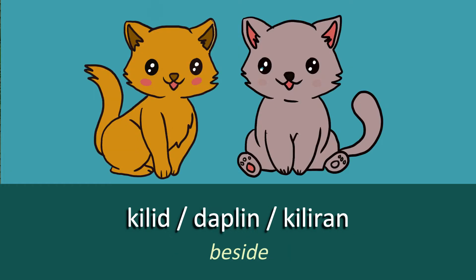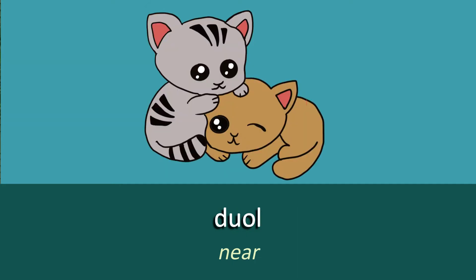Moving on, we have the word for 'Beside'. In Besaya, Beside is 'Kilid'. You can also use 'Daplin' or 'Kiliran'. Our next word for you is 'Near'. You can just say 'Duol'. Nice and simple — Near is Duol.